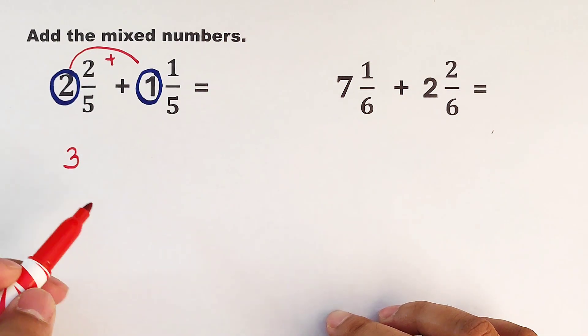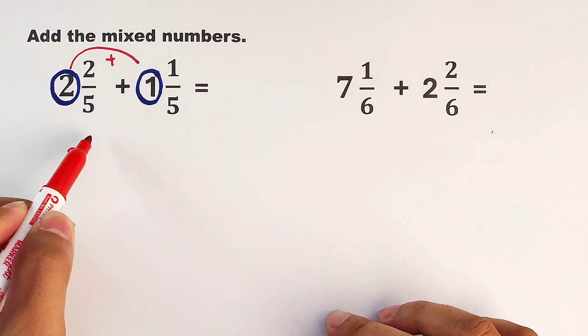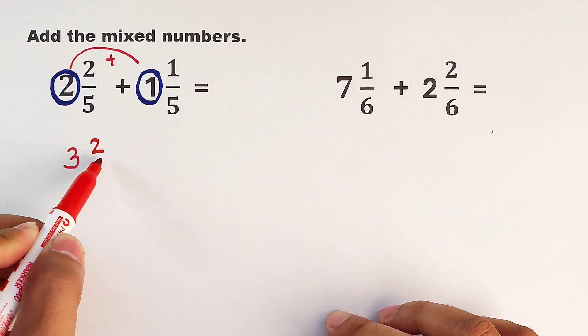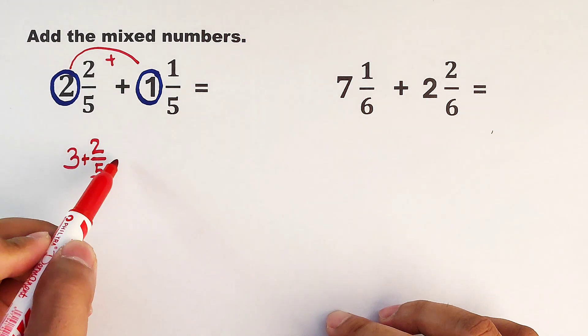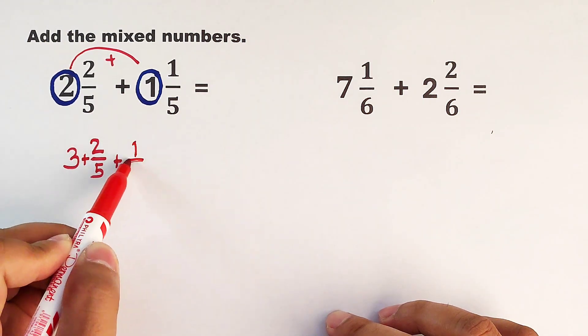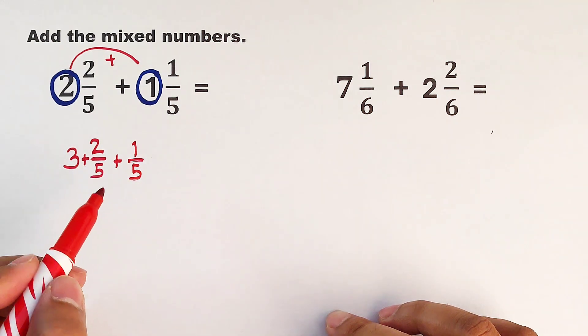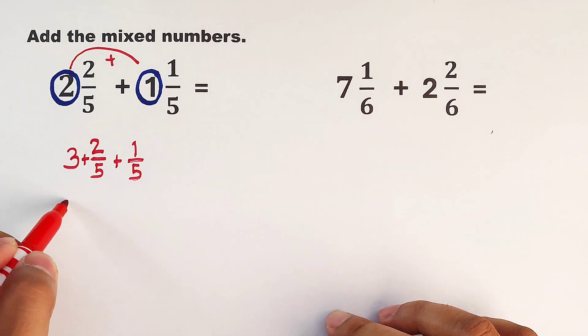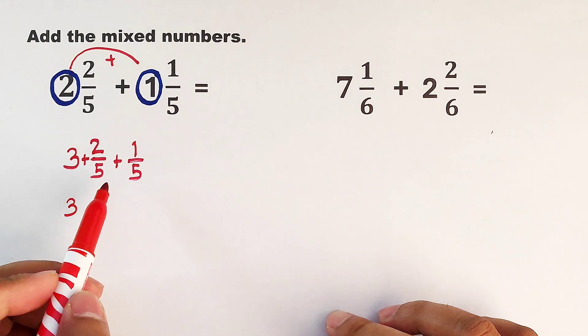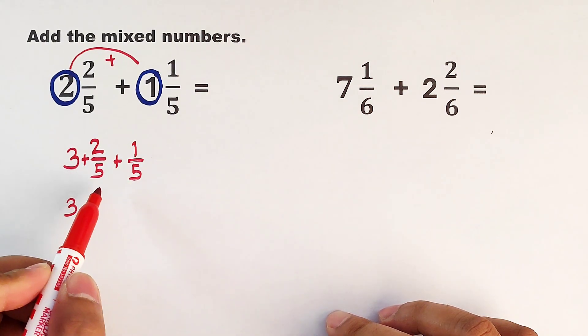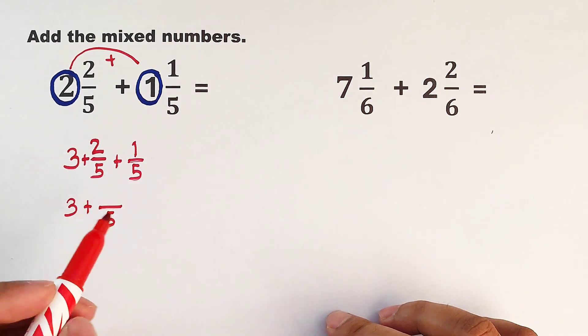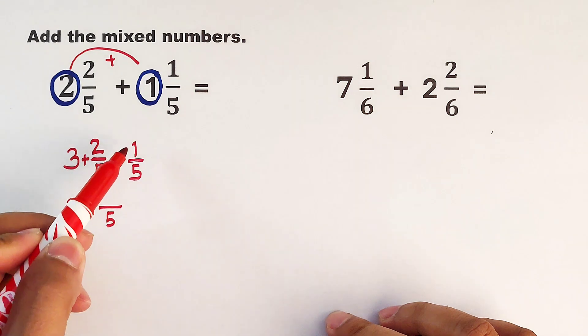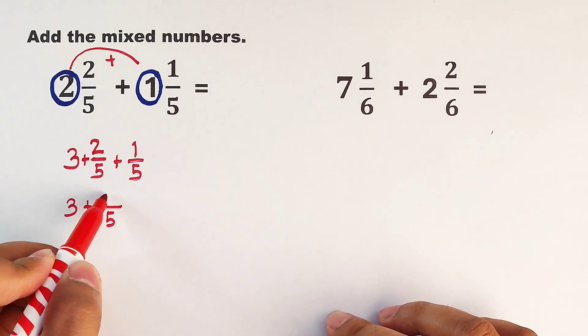And now as for the fraction part, we can have here 2 fifths plus 1 fifth. So here guys, we will copy 3. And then as for the fractions, since they have the same denominators, what we need to do is this: we will copy the same denominator and then simply add the numerators. That would be 2 plus 1. So the answer is 3.